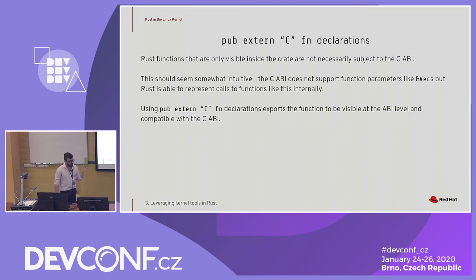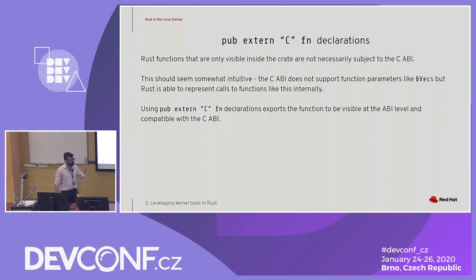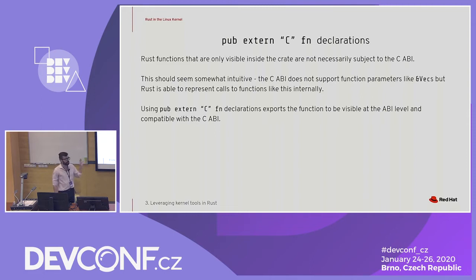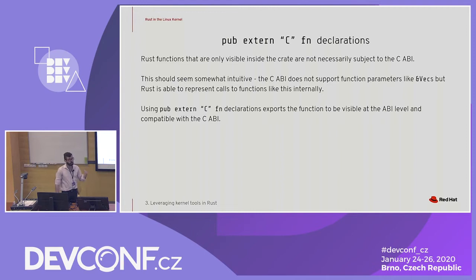When we talk about extern C function declarations, one note is that this is not going to validate that everything you've done is C ABI compliant — there is some work you have to do to make sure you're doing everything correctly. This is because not everything in Rust is actually compatible with the C ABI. You can force it to become that way, but it's not going to be that way by default, and this should be relatively intuitive because we're representing things that are just not representable in the C type system.